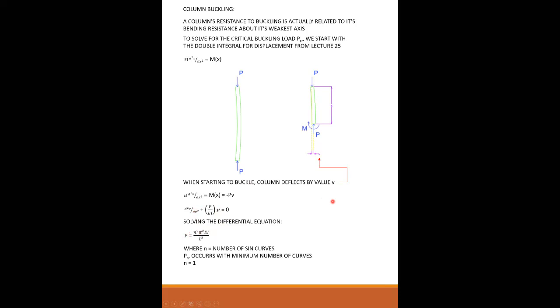In this equation, n is equal to the number of sine curves. P critical occurs with the minimum number of sine curves — that's the shape that creates the minimum critical buckling load. If we say n equals one, the most fundamental shape, then we can define the Euler buckling load: P critical equals π²EI over L². This is known as the Euler buckling load.